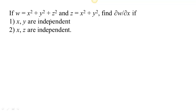It's common for us to have a function with some constraint on the variables of that function. In this case we have w, which is a function of x, y, and z, but we also have the constraint that z has to be equal to x squared plus y squared.